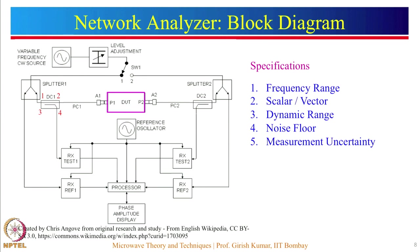This is a very simplified architecture of a network analyzer. A variable frequency continuous wave source is given to the input of two power dividers or splitters through a level adjustment — a variable attenuator — through a switch. One end of each power divider is connected to a power detector. The other half of the power is given to a directional coupler, and between these two sets sits the DUT. There are two more power detectors: test 1 and test 2.